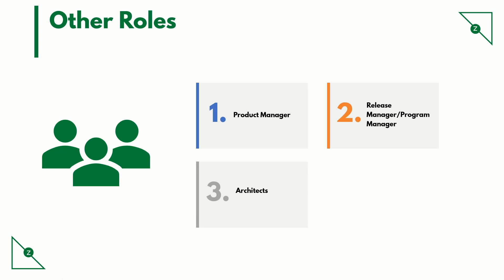Architects drive the technical part of the team's work. They define the design guidelines, review design changes, and perform architectural governance. Though they are not part of the sprint ceremonies, they are typically involved in the beginning and end of a release. Other stakeholders are anyone getting impacted by the work done by the scrum team — typical examples are senior management, senior members from the business, technical support teams for transition, and professional services teams.